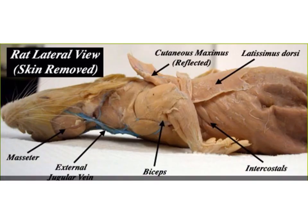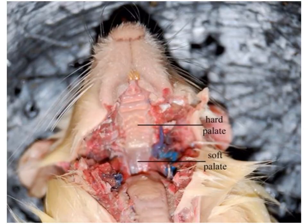In this additional view we can see the masseter, the latissimus dorsi, the biceps relative to the large triceps, the external jugular vein as one of the main veins of the body, and the intercostals — the muscles running between the ribs that help with breathing. While these are not all the muscles of the rat, they give a good idea of the main muscles seen during a typical dissection.